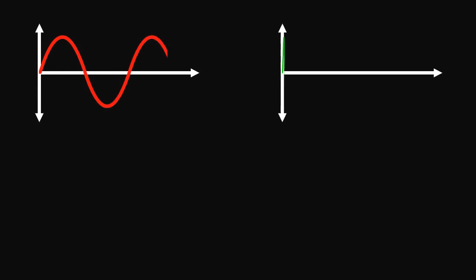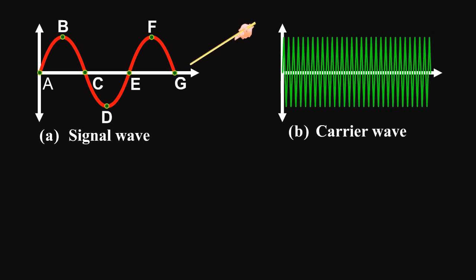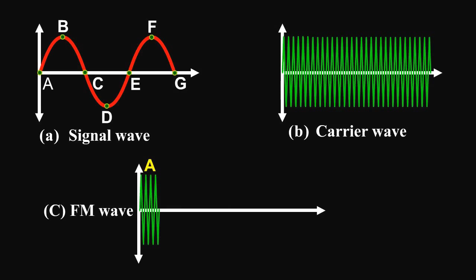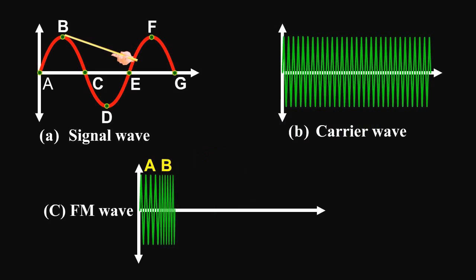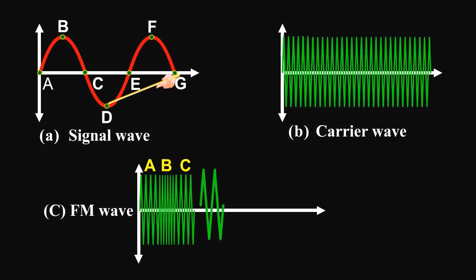The frequency variation of the carrier wave depends on the instantaneous amplitude of the signal. When the signal voltage is zero at points a, c, e, and g, the carrier frequency is unchanged. When the signal approaches its positive peaks at b and f, the carrier frequency is increased to maximum, as shown by closely spaced cycles. During the negative peaks of the signal at d, the carrier frequency is reduced to minimum, as shown by widely spaced cycles.